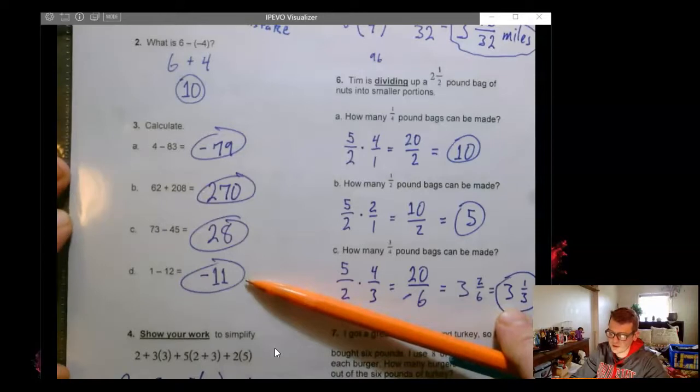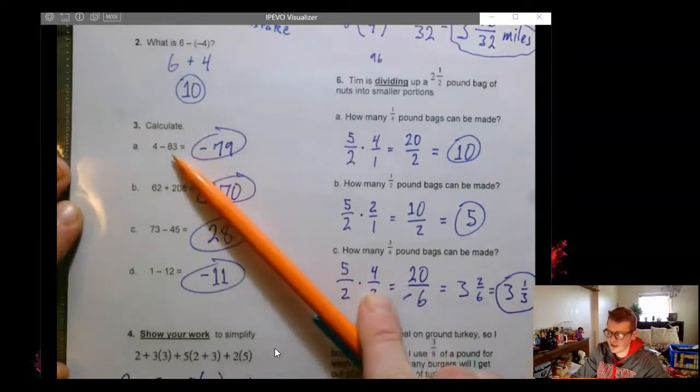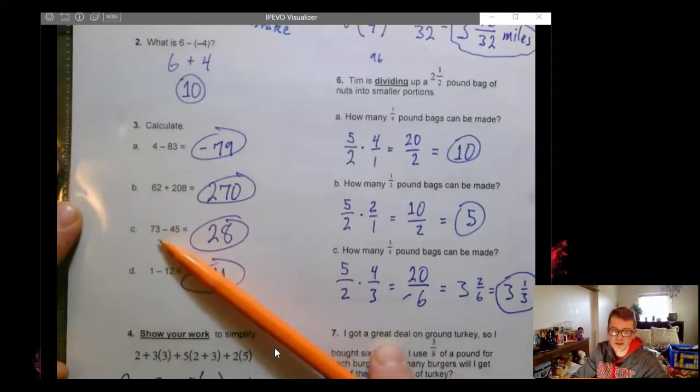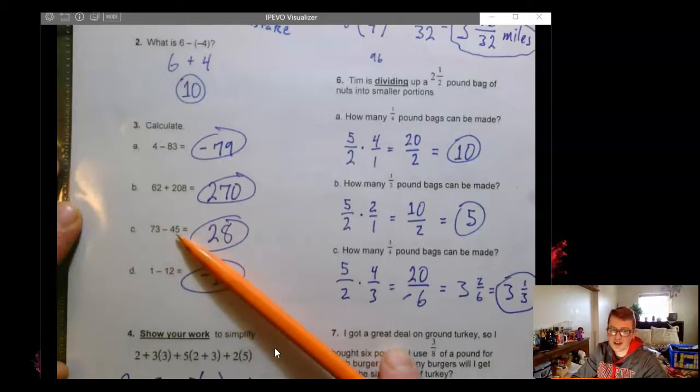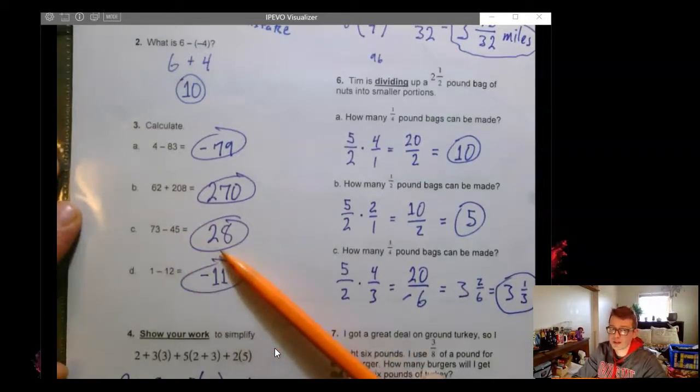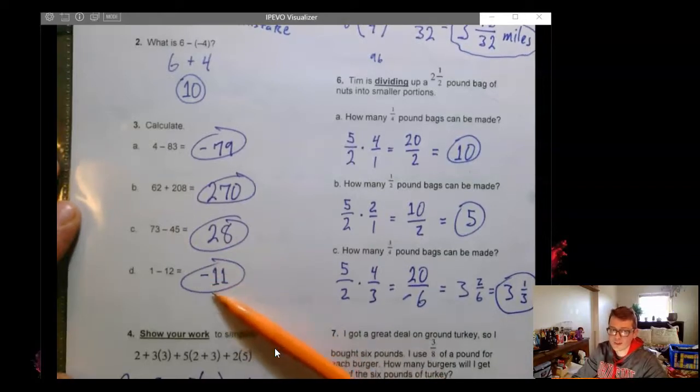and negative 11. Remember, if we change all of these to addition, this is addition of a negative and the negative would obviously win when we think about the good guy, bad guy battle. 73 plus a negative 45, the good guy there would win by a difference of 28. And here, the bad guy wins by 11.